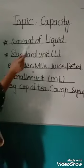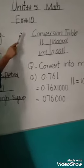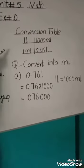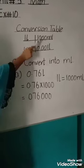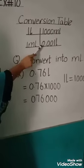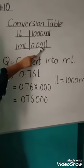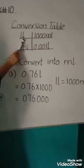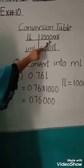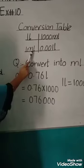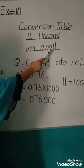In the same way, we move on to exercise number 10, Conversion Table. 1 liter is equal to 1000 ml, and 1 ml is equal to 0.001 liter.